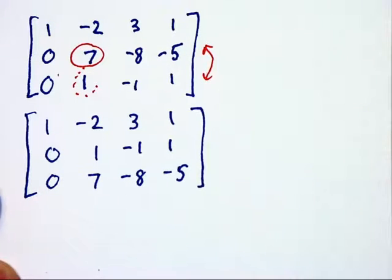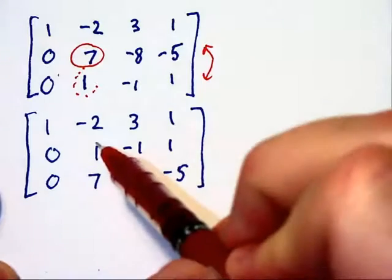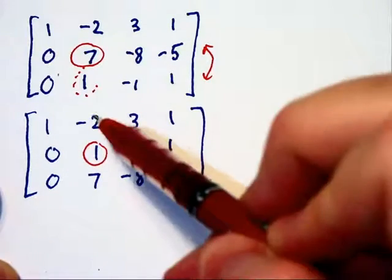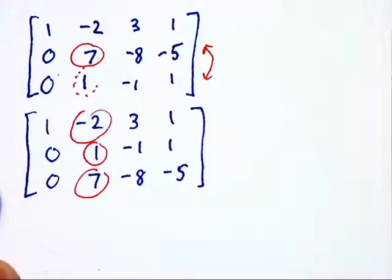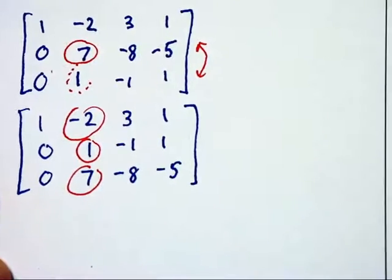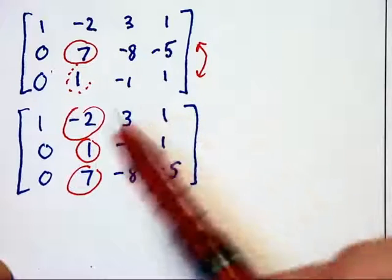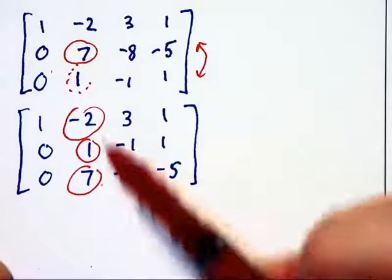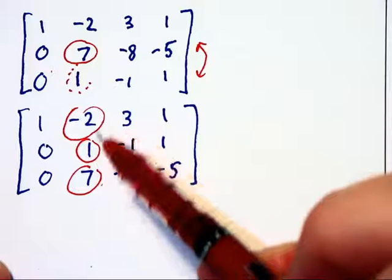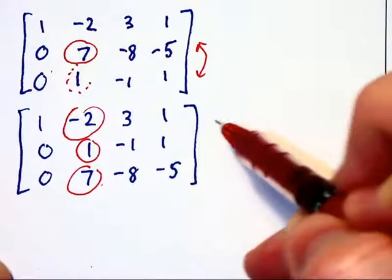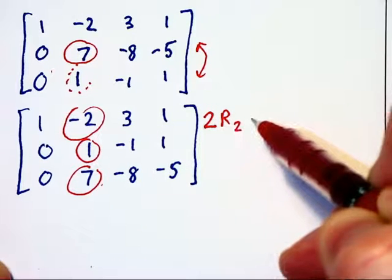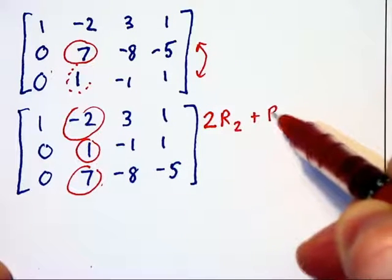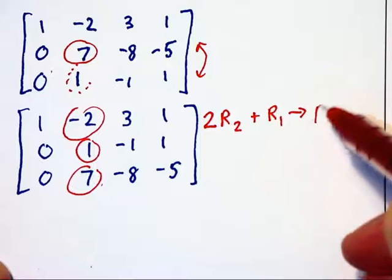So there we have it. Now we have our 1 where we want it in the second row, second column. And we wish to get zeros above and below it where the -2 and the 7 are. Now we will get those zeros by multiplying 1 by the opposites of these coefficients. So to cancel out that -2, we will multiply 2 by row 2,